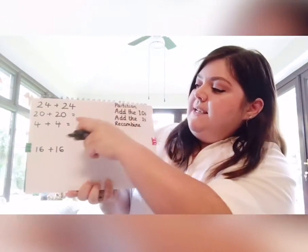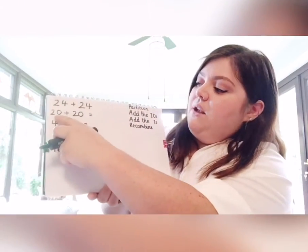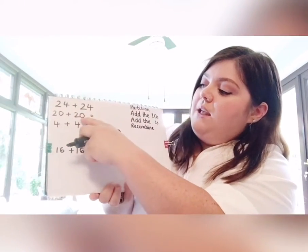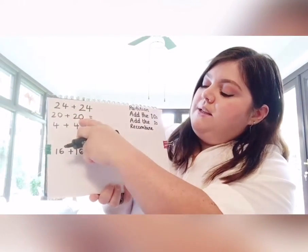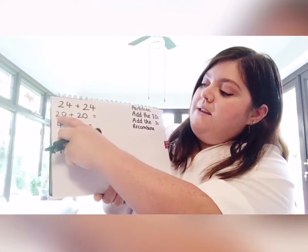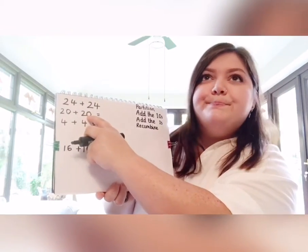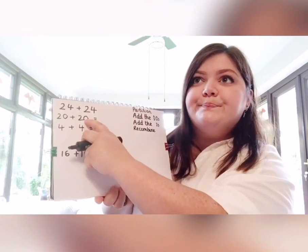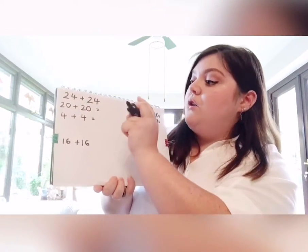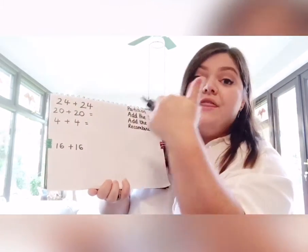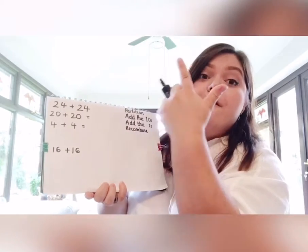Adding the tens: 20 add 20 — so two tens add two tens. 20, 30, 40.